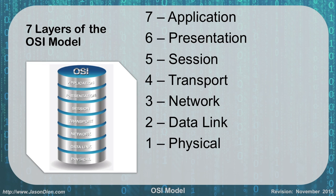As I said before, we have 7 layers of the OSI model: physical, data link, network, transport, session, presentation, and application layers — going from the bottom to the top.